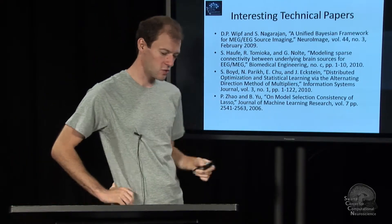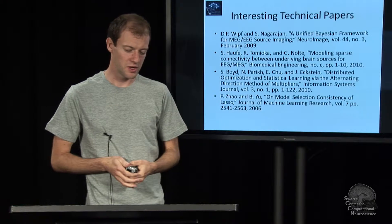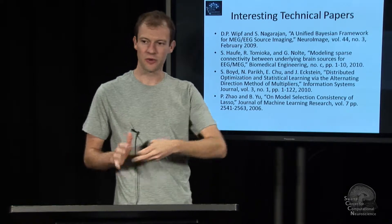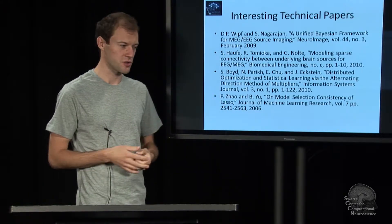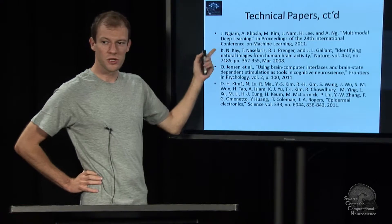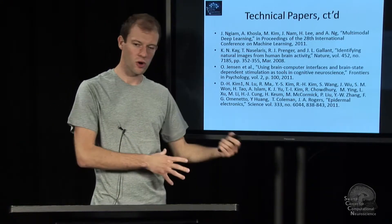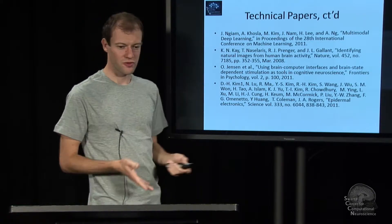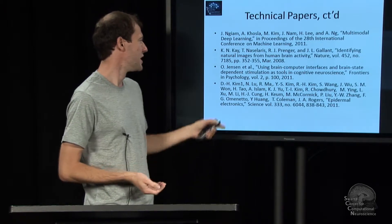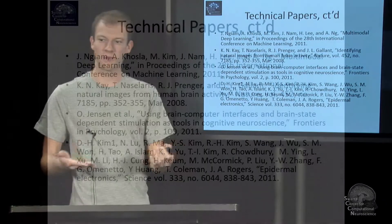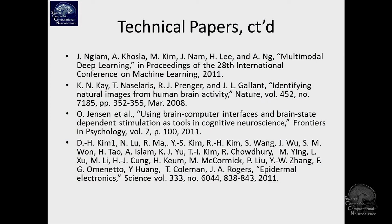Zao and Yu are among the first to formally describe and prove the ability of certain kinds of sparse methods to deal with exponentially many variables, which is one of the cornerstones of what many people are doing today. There is also work on multimodal learning relevant to anyone working across EEG and other modalities, as well as interesting work from the fMRI literature — such as papers where people reconstructed pictures or videos from the visual cortex. These are certainly useful to read and involve fairly advanced methodology.